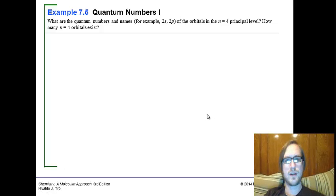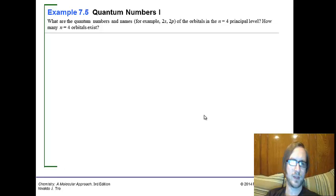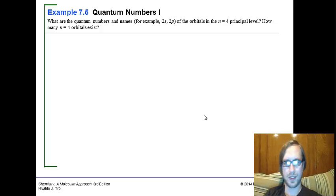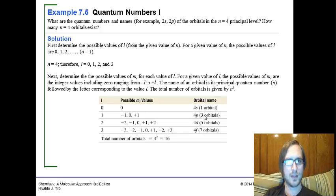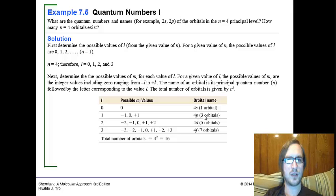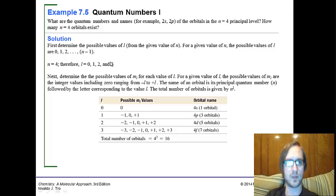Quantum numbers. What are the quantum numbers and names of the orbitals in the n equals 4 principal level? How many n equals 4 orbitals will exist? This is testing your understanding of the relation between n, l, and ml. The possible values of l—it's always n minus 1. So if we had n equals 4, then l could be 0, 1, 2, or 3. We start at 0 and count up until we get to 4 minus 1 because n is 4.